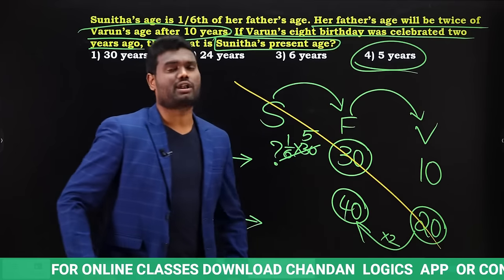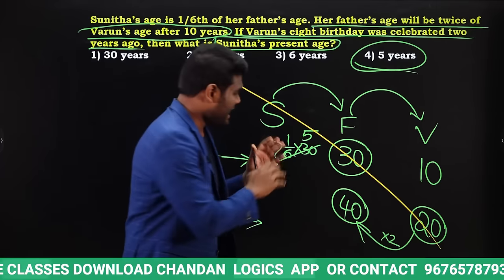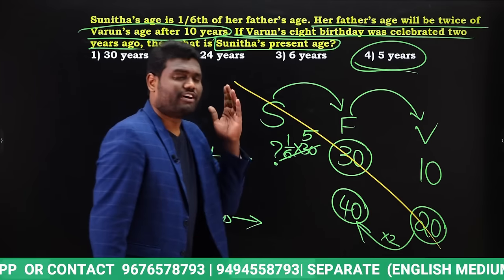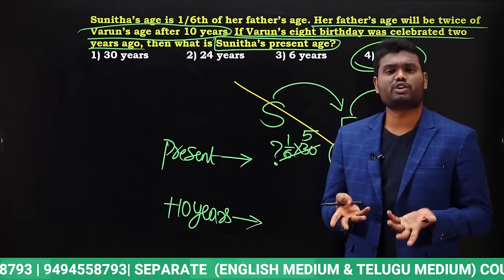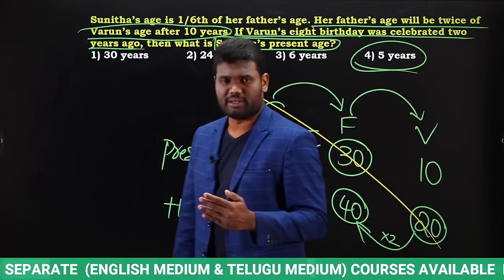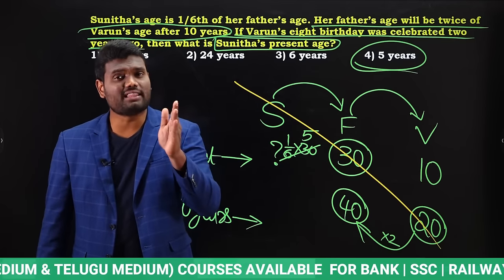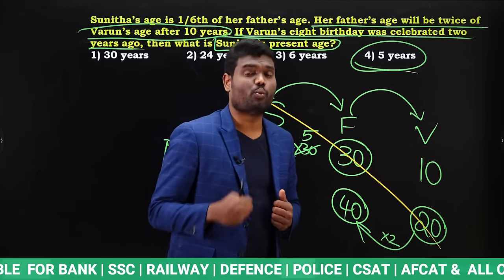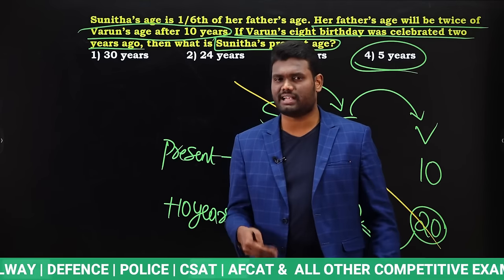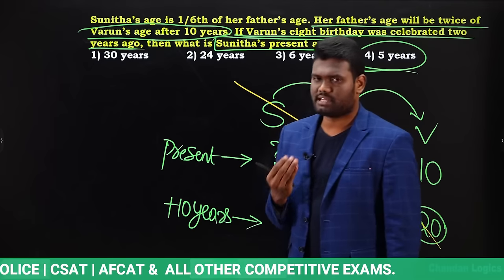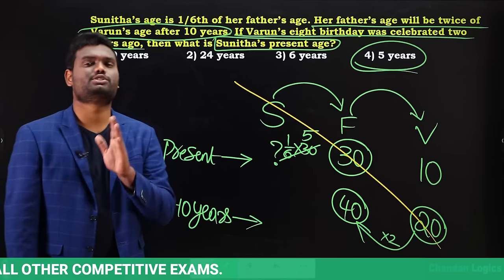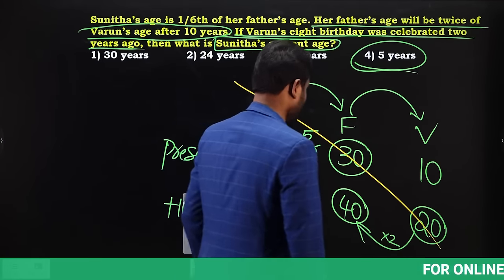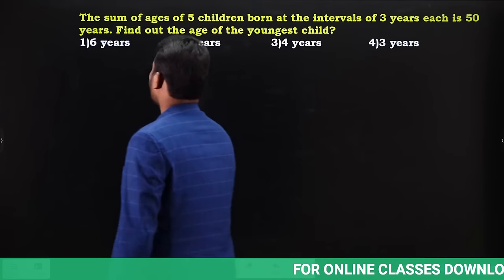Sunita's age is 1/6 of father's age = 1/6 × 30 = 5 years. This entire question can be done orally: Varun's present age is 10, after 10 years it's 20, father is twice that = 40 after 10 years, so father's present age is 30, and Sunita is 1/6 of 30 = 5 years.